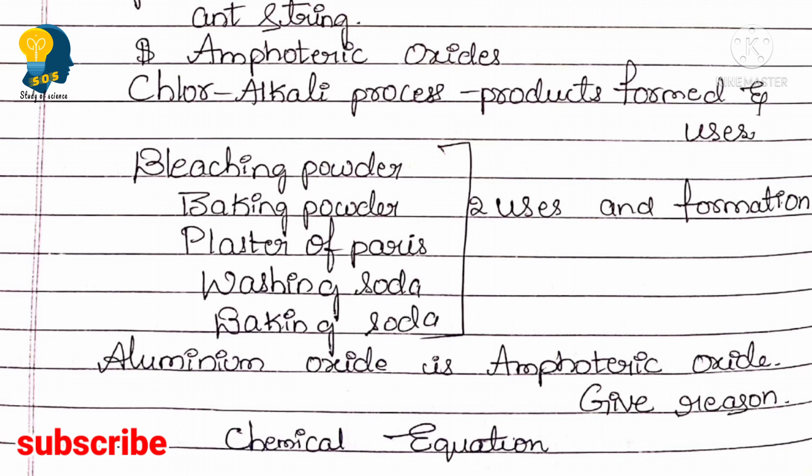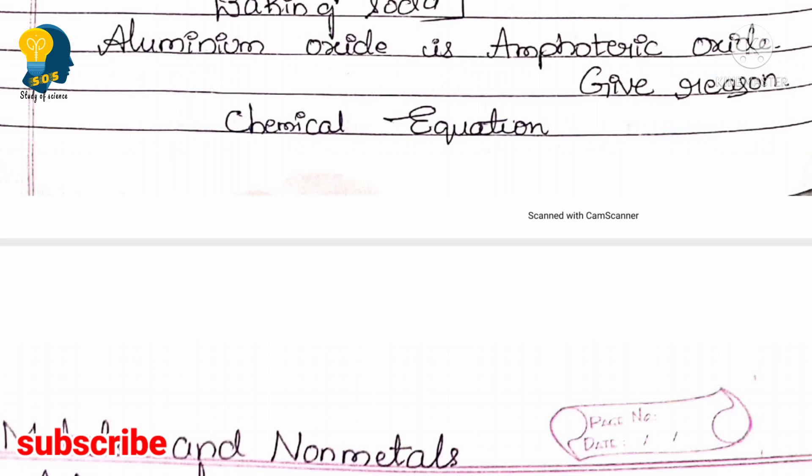Very importantly, learn two uses each for: bleaching powder, baking powder, plaster of Paris, washing soda, and baking soda. Know their formulas, how they are formed, and their uses — the resource person said this is very, very important. Also note that aluminium oxide is called an amphoteric oxide because it reacts with both acids and bases. They may ask you to write the chemical equations for these reactions. Finally, learn all the chemical equations present in the Acids, Bases and Salts lesson.